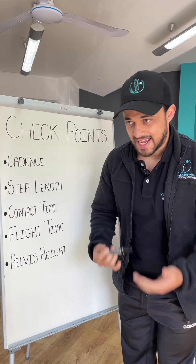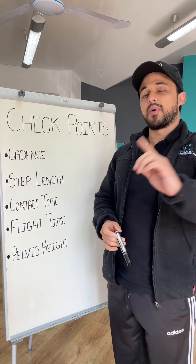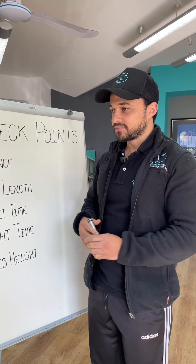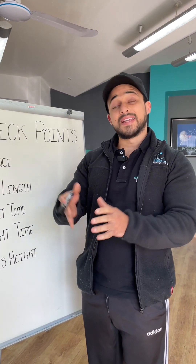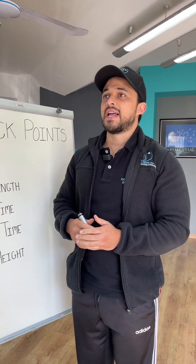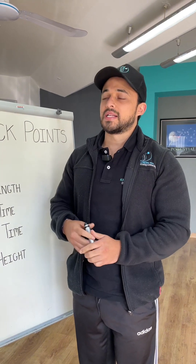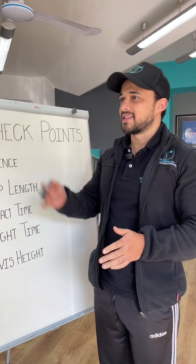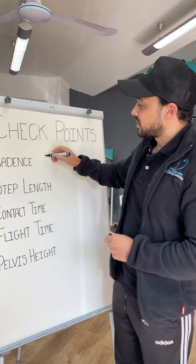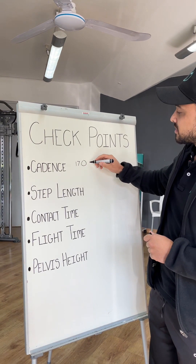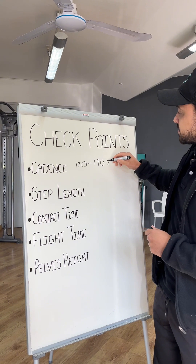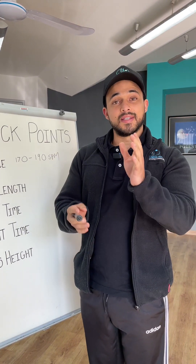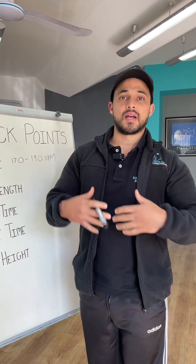When looking at running gait analysis there are certain checkpoints. Number one, and most people say it is the most important, is cadence. Cadence is essentially the amount of steps you take within a minute. Your cadence should be around 170 to 190 steps per minute, and 180 seems to be the sweet spot in terms of feeling great while running.